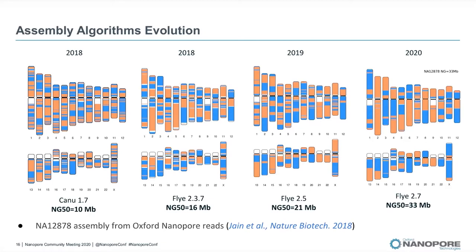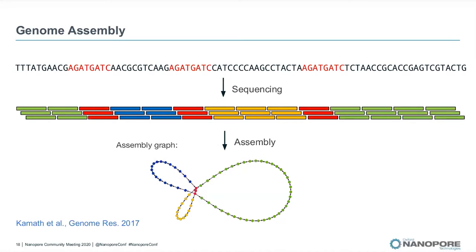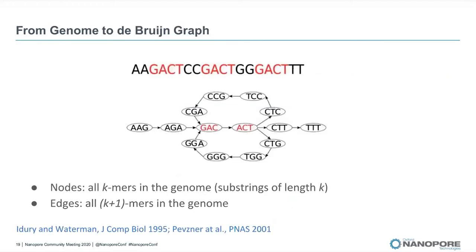Now I will introduce you to assembly graphs, which are common data structures used in genome assembly. Assembly graphs are a very convenient way to represent sequence data, and different assembly algorithms build different kinds of graphs — such as overlap graphs, string graphs, or de Bruijn graphs — each with slightly different properties. In this talk, I will introduce you to one method called the de Bruijn graph.